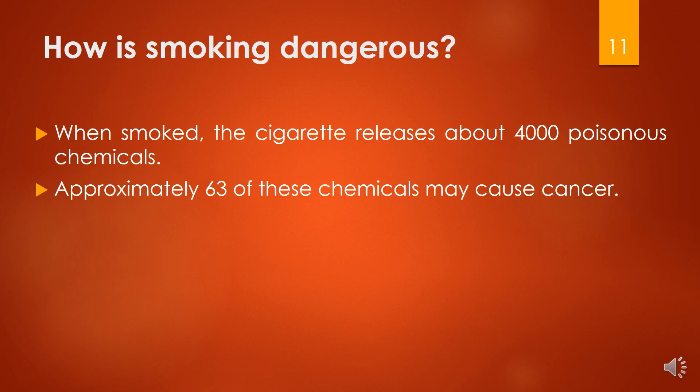How is smoking dangerous? When smoked, a cigarette releases about 4,000 poisonous chemicals. Approximately 63 of these chemicals may cause cancer.